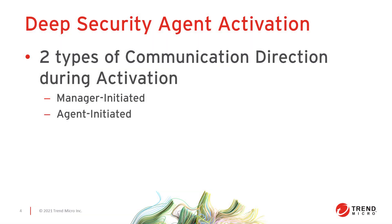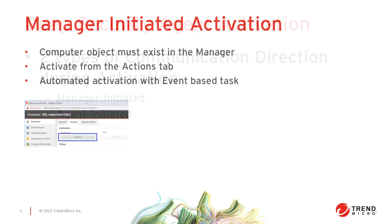When discussing Deep Security Agent activation, we must first differentiate between the two activation initiation options: manager-initiated and agent-initiated activation. When activating an agent from the manager, the computer to be activated must exist within the computers list from a connector like AWS, Azure, or vCenter, or the computer must be manually added with its IP address or hostname to the manager. After being added, from the Actions tab for the computer, there's a button to activate the agent.